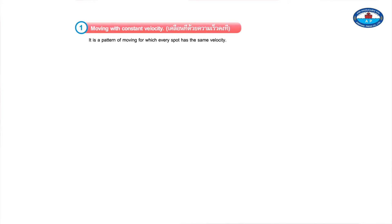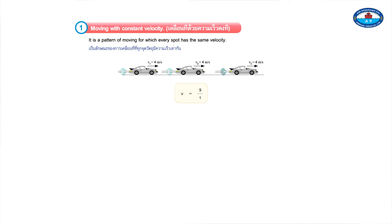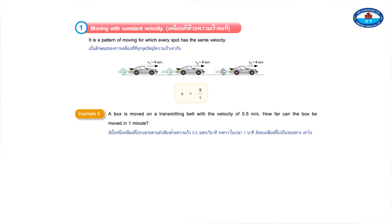Type 1: Moving with Constant Velocity. It is a pattern of moving for which every spot has the same velocity. Example 6: A box is moved on a transmitting belt with a velocity of 0.5 meters per second. How far can the box be moved in one minute? The box is moved for 30 meters.